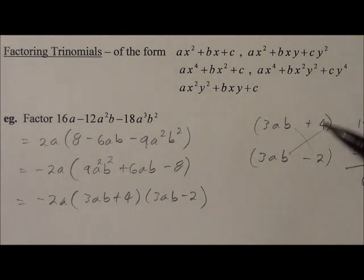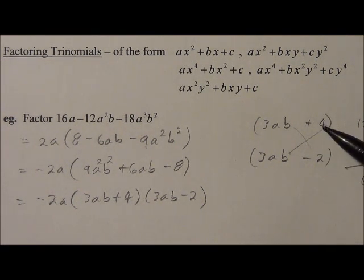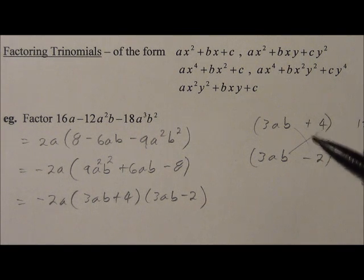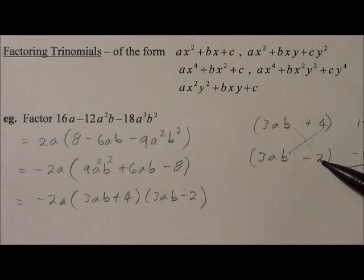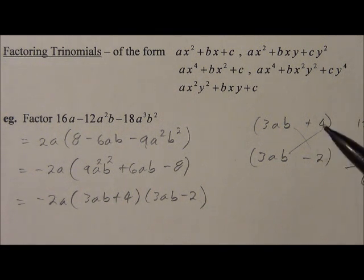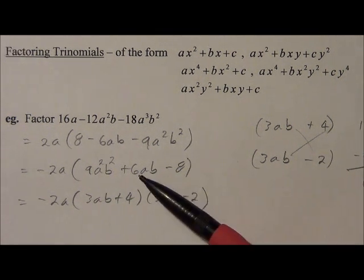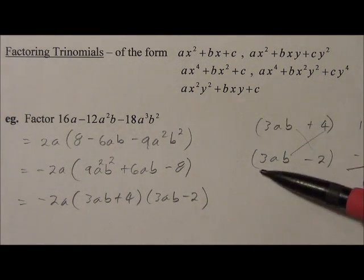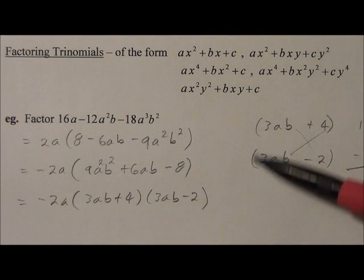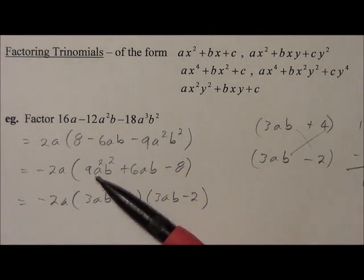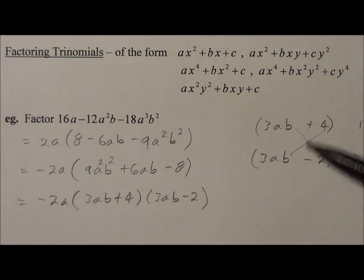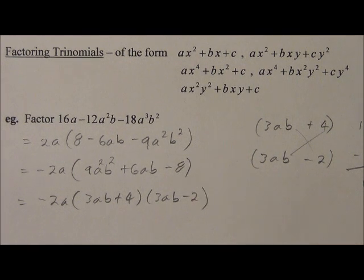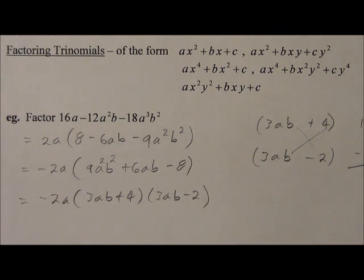So if you happen to guess incorrectly there, don't worry about it. Just, if you had the signs incorrect, or you had 8 and 1 there, or 2 and 4 there, it doesn't matter. Just rearrange it and try again. Just cross multiply again, and add them, and see if you get that middle term again. The most important thing to start out with is that these two factors will give you that product, and these two factors will give you that product. And that's the beginning, which is the most helpful.